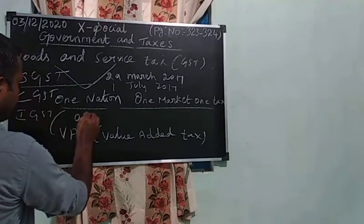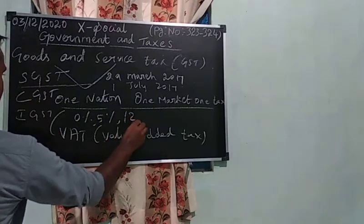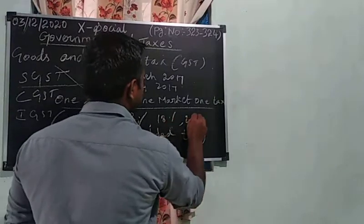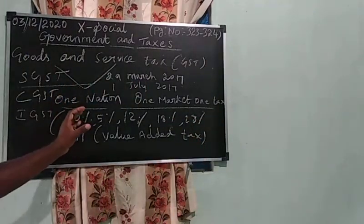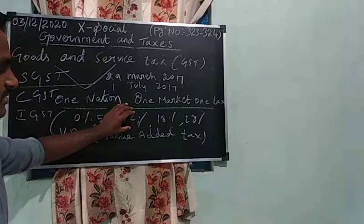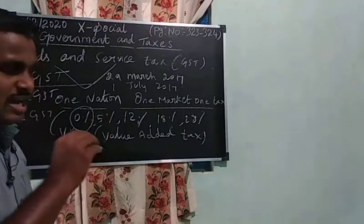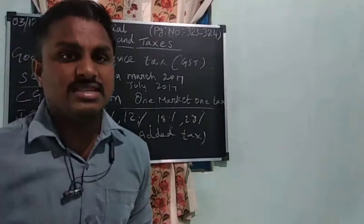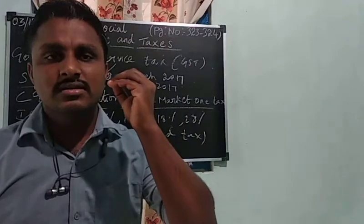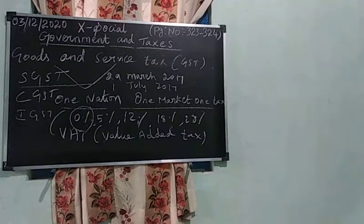GST starts from 0%, then 5%, 12%, 18%, and 28%. This is collected based on goods and services. For daily necessities like fruits and vegetables, 0% tax is charged — we are not collecting taxes on these items.